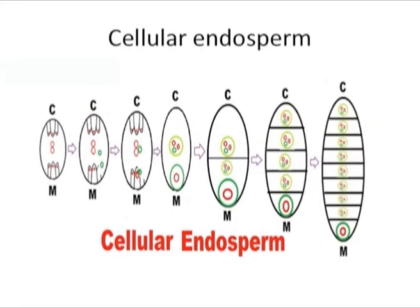In the cellular endosperm, wall formation takes place with each division of the triploid endosperm nucleus. As a result of repeated divisions and wall formation, a multicellular endosperm tissue is formed.